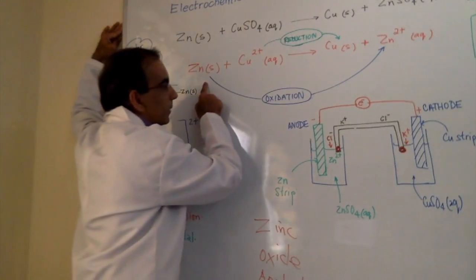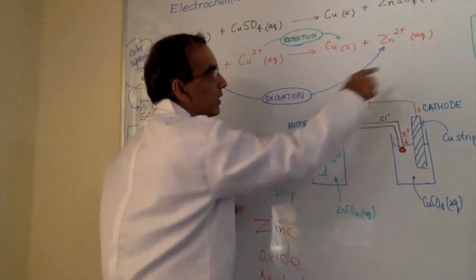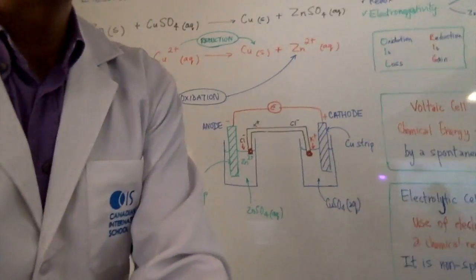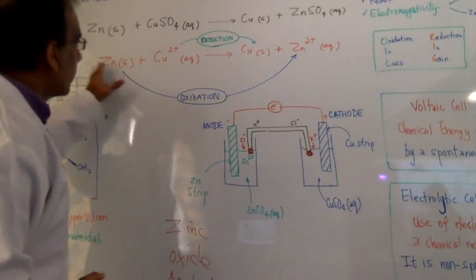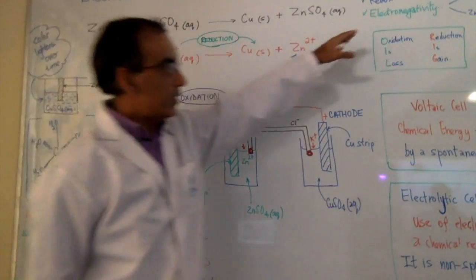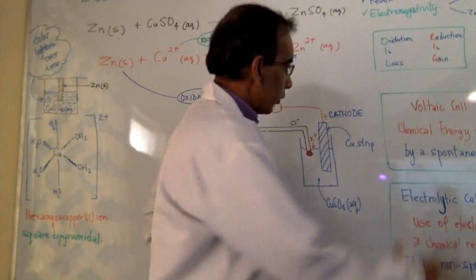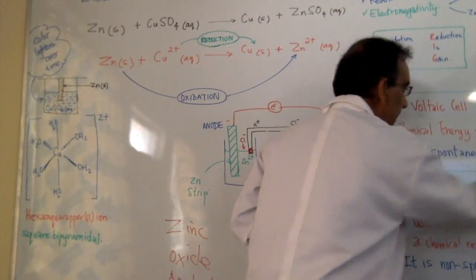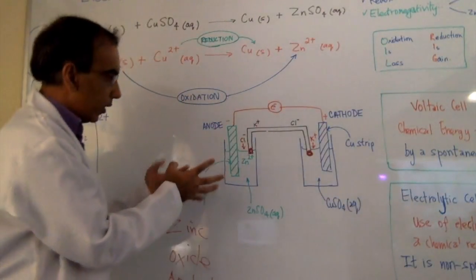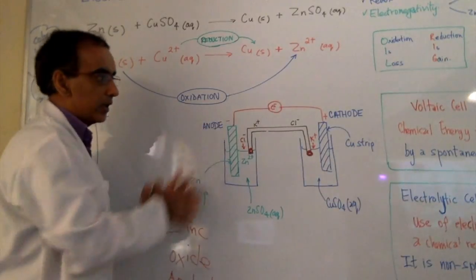We have zinc undergoing oxidation. Oxidation is loss. And copper undergoing reduction. Reduction is gain. The voltaic cell showing us a spontaneous reaction, where chemical energy becomes electrical energy.